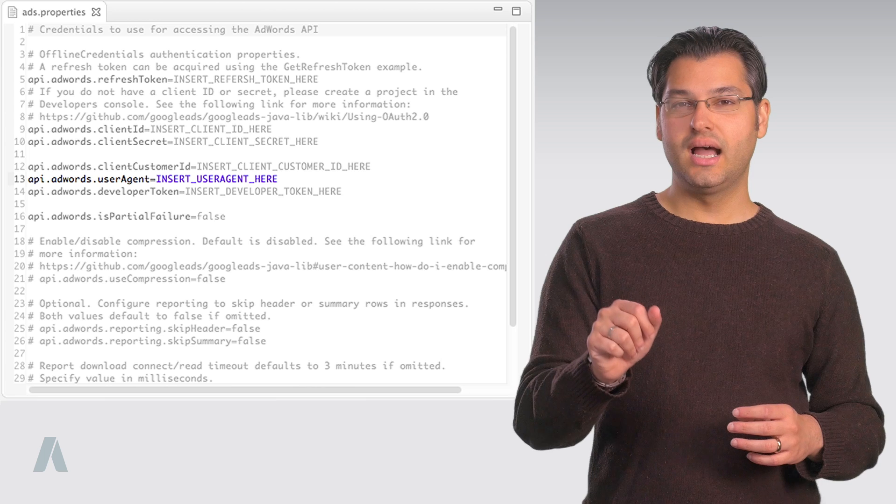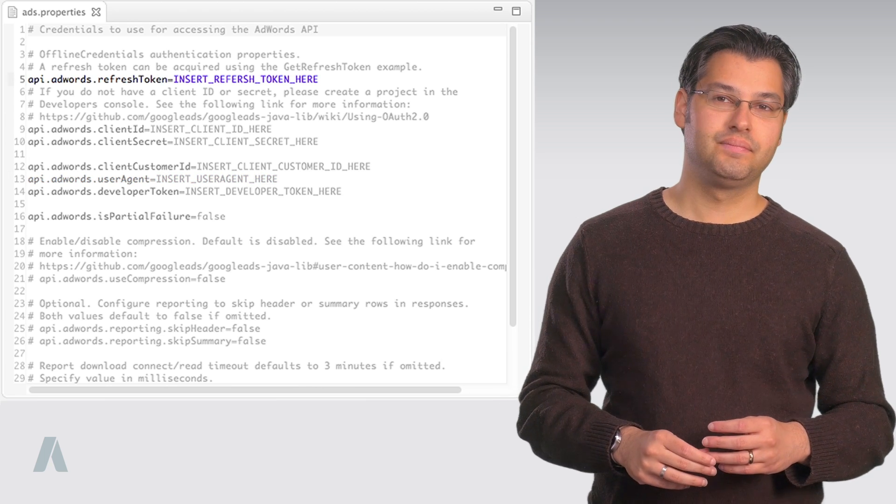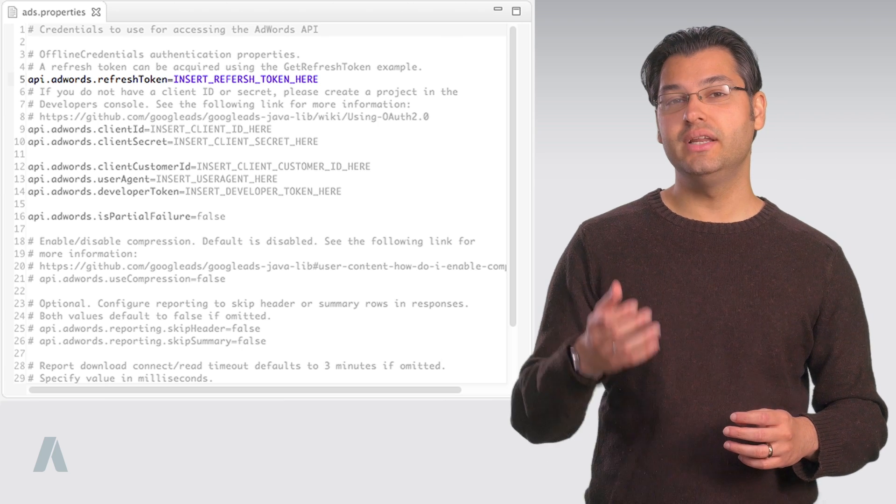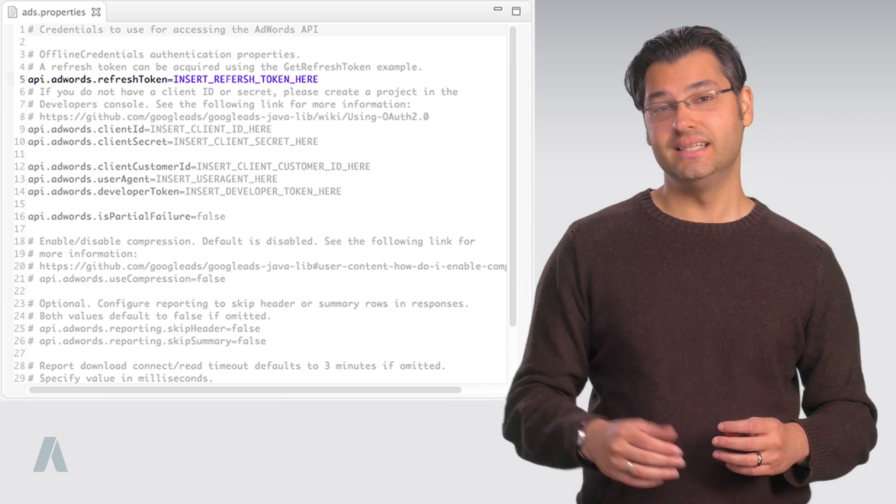You'll notice that there is a line for a refresh token. This token is used by the client library to generate new OAuth tokens as needed. The client library has the utility to retrieve that refresh token, which we can use now.